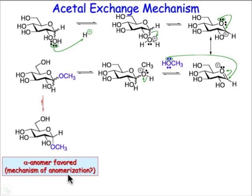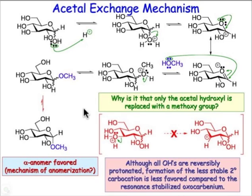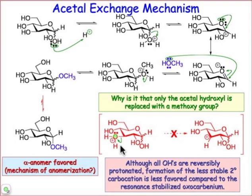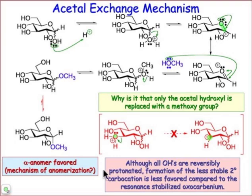To summarize: why is it that the acetal hydroxyl group at the anomeric position is the only one that's replaced? If you were to protonate any of the other hydroxyl groups — say the hydroxyl group at C3 — and it were to leave, it would end up generating a carbocation. There is no adjacent oxygen to help stabilize it, unlike what we had with the oxocarbenium ion where there was this important n-to-pi donation. This carbocation is too unstable; it's an energetically much higher pathway and is not a viable reaction pathway. So the only hydroxyl group which undergoes acetal exchange is the anomeric position.